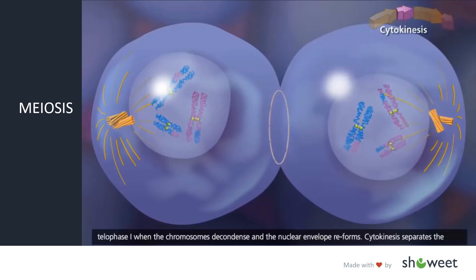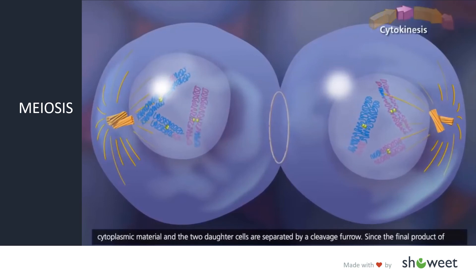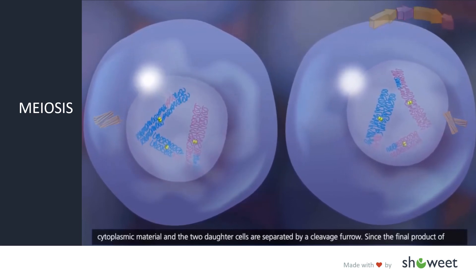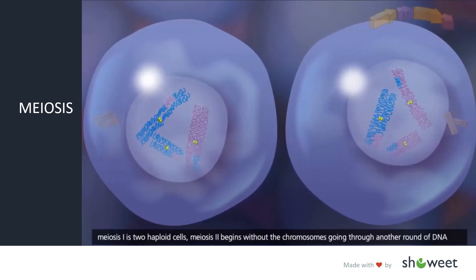Cytokinesis separates the cytoplasmic material and the two daughter cells are separated by a cleavage furrow. Since the final product of meiosis I is two haploid cells, meiosis II begins without the chromosomes going through another round of DNA replication.